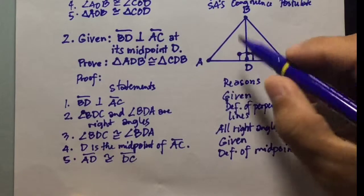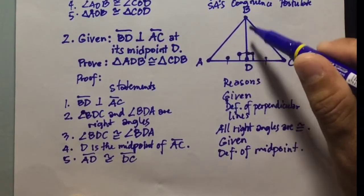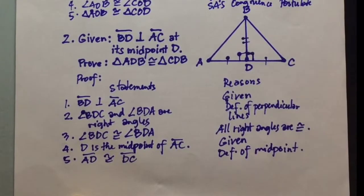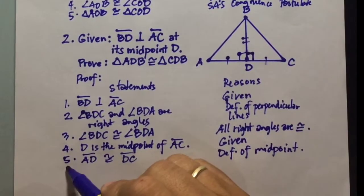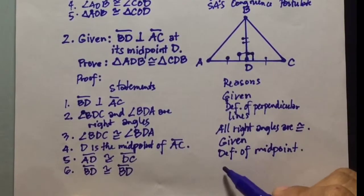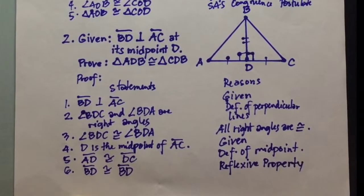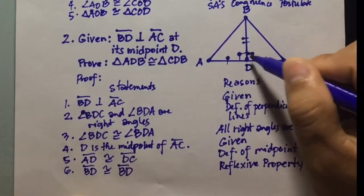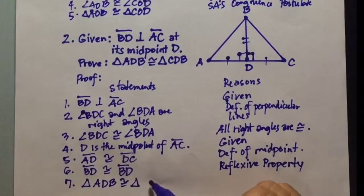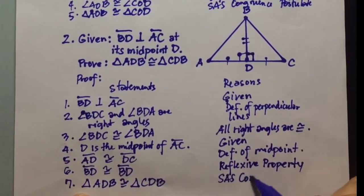We have proven that line segment AD is congruent to line segment DC, and that angles BDA and CDB are congruent. We also need the third pair of sides: since line segment BD is the same segment shared by both triangles, we can write that line segment BD is congruent to line segment BD using the reflexive property. So side, angle, side — we can say that triangle ADB is congruent to triangle CDB by the SAS congruence postulate.